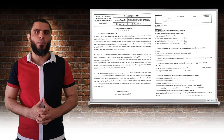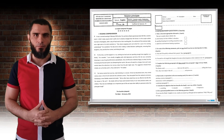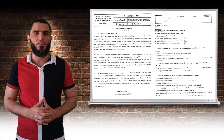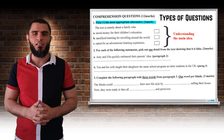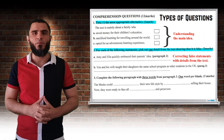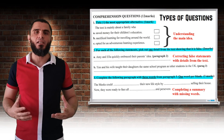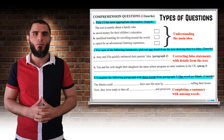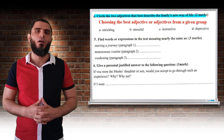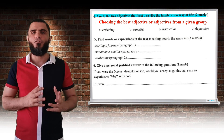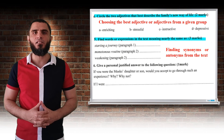Let's take this simple reading comprehension text to identify the mistakes related to each question. The questions we have in this exam are: understanding the main idea of the text, correcting false statements with details from the text, completing a summary with missing words, choosing the best adjective or adjectives from a given group, and finding synonyms — or you can also have antonyms — from the text.